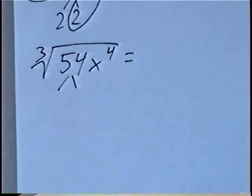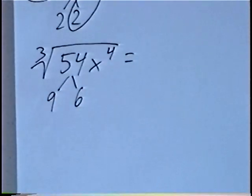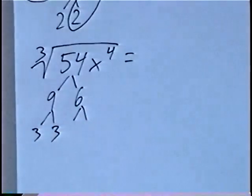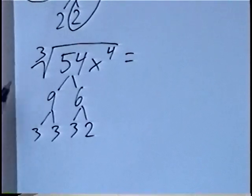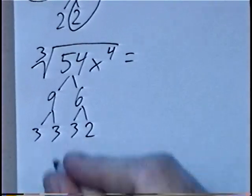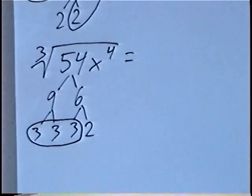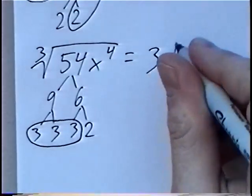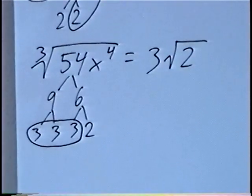Factoring: 9 goes to 3 times 3, and 6 goes to 3 times 2. For the cube root of 54, instead of pairs, since we have a cube root we're looking for sets of 3. A set of 3 would be the three 3s — any sets go outside the radical. Inside the radical would be the single number that we did not circle, which would be a 2.